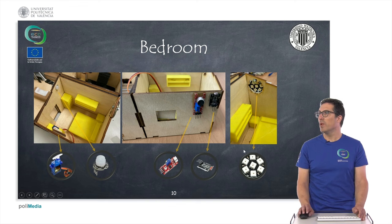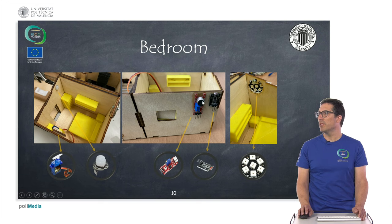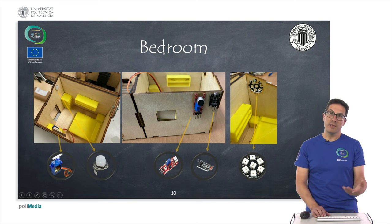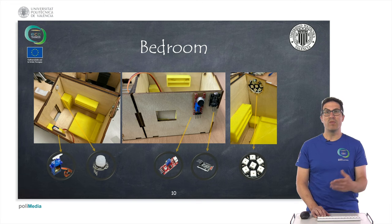In the bedroom, a PIR sensor is used to detect the presence of someone inside the room. A servo will open and close the window, and a microphone is used to detect external sound. An LDR sensor detects ambient external light. RGB LEDs produce illumination inside the bedroom with a range of colors.